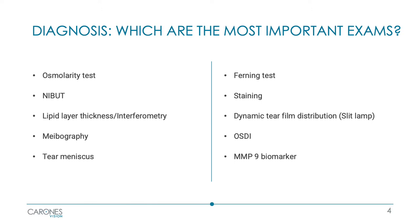The thickness of the lipid layer through interferometry. Meibography to check meibomian gland morphology. Tear meniscus height in place of Schirmer test, because it is not correlated to corneal sensitivity. Sometimes also the ferning test. The staining test of the cornea and conjunctiva with fluorescein to look for suffering or damaged areas. The evaluation of tear film distribution by the slit lamp.